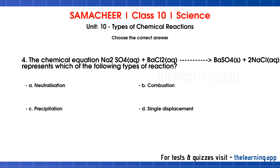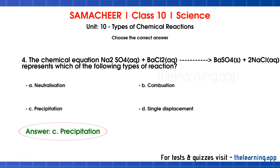Fourth question: The chemical equation Na2SO4 plus BaCl2 gives BaSO4 plus 2NaCl represents which of the following types of reaction? Options are A) neutralization, B) combustion, C) precipitation, D) single displacement. Correct answer is option C, precipitation.